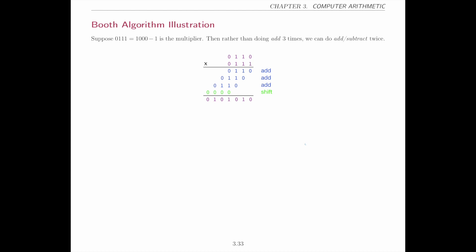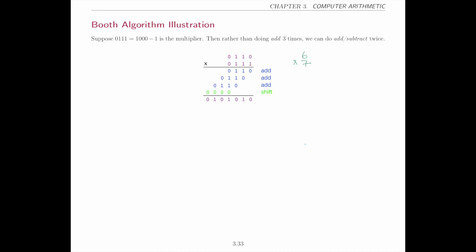If you are multiplying, say, number six by number seven, you're going to have three additions now. If this were a larger number with a lot of ones in it, it's going to be slow. Can we do any better? I want to point out a very simple mathematical trick here — once you see it, it's obvious, but before you see it it's actually not so obvious. Note that six multiplied by seven is the same as six multiplied by eight minus one.